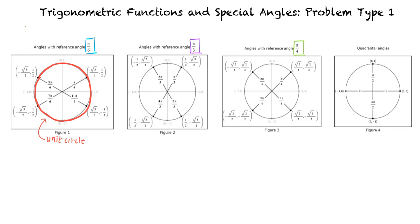Okay, this all makes sense, but can we try an example problem? Of course, let's find the exact value of sine of 3 pi over 4.